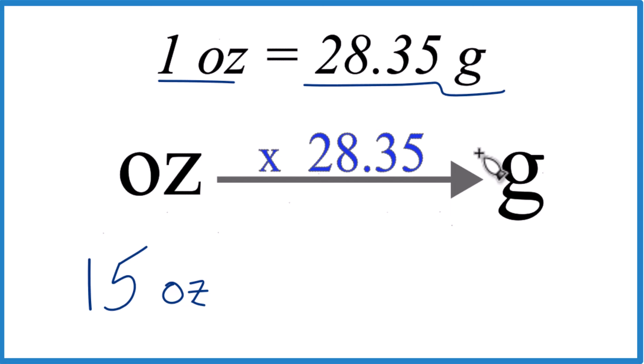We call that a conversion factor. We use that when we go from ounces to grams. So here we have 15 ounces. We're going ounces to grams, so we multiply by 28.35.